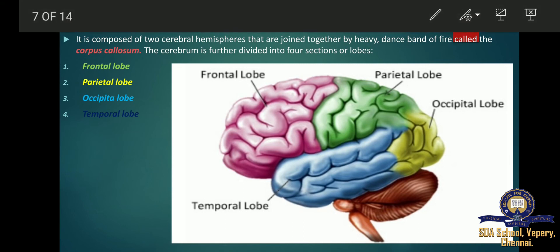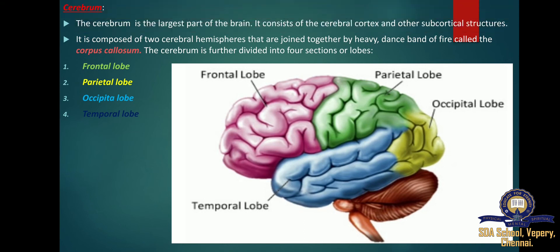The parietal lobe is located at the upper rear of our brain and controls complex behaviour including senses such as vision, touch, body awareness, and orientation. It plays an important role in integrating sensory information from various parts of the body, knowledge of numbers and their relations, and in the manipulation of objects.